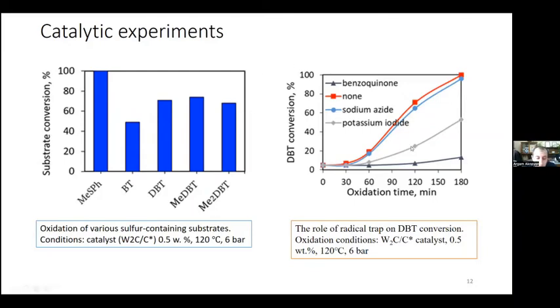It is known from the literature that the addition of a radical trap to the system makes it possible to determine how oxygen is activated. In particular, it was shown in literature that active centers consisting of tungsten in an intermediate oxidation state can activate oxygen by forming a superoxide radical. The formation of this radical was confirmed by the addition of benzoquinone, which is a well-known superoxide radical trap to the system. According to the results, the addition of benzoquinone to the system leads to a sharp decrease in the degree of DBT conversion, which indicates that the formation of superoxide radicals is the main mechanism involved in DBT oxidation. The addition of potassium iodide slightly affects the oxidation of DBT, reducing the conversion to 53%.